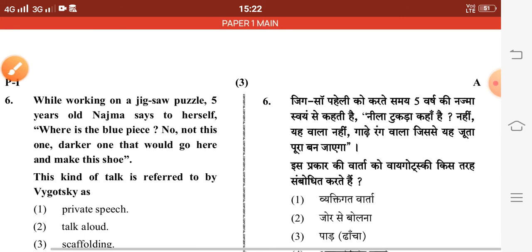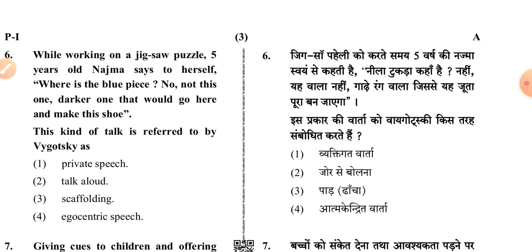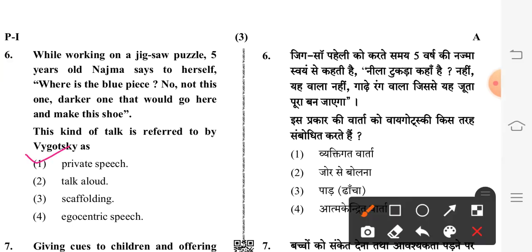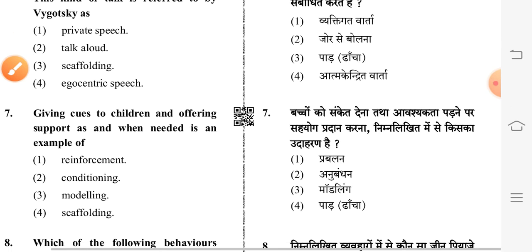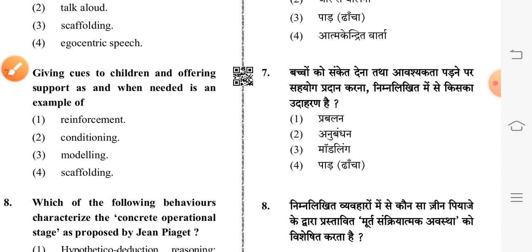Next question: while working on a puzzle, five-year-old Nazma says to herself, 'Where is the blue piece? No, not this one — the darker one. That would go here and make this true.' This kind of talk is referred to by Vygotsky as — first option: private speech.